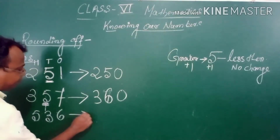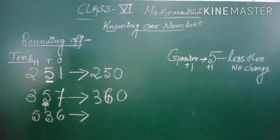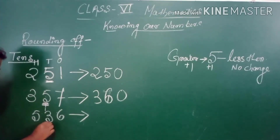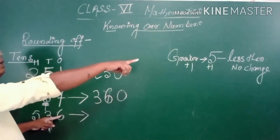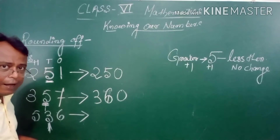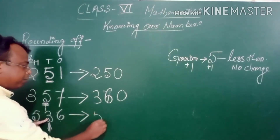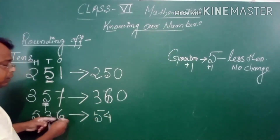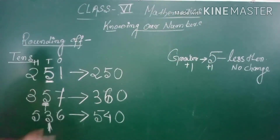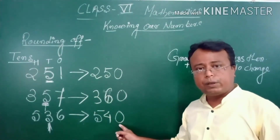Let us take one more example: 536. We are rounding up to the nearest 10. The tens digit is 3. See the next digit — it is 6. Is 6 greater than 5? Obviously yes. So we add 1 to the tens digit: 3 plus 1 equals 4, and the units digit becomes 0. So 536 rounded to nearest 10 is 540.